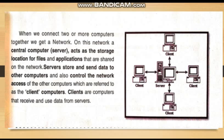When we connect two or more computers together, we get a network. On this network, a central computer is known as a server, which acts as a storage location for the files and applications that are shared on the network. Servers store and send data to other computers and also control the network access on the other computers, which are referred to as clients. As you can see in the figure, the central computer is the server and those computers connected to the server are called clients.